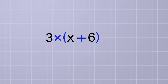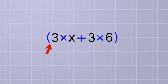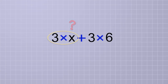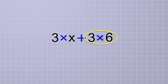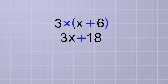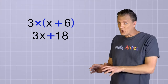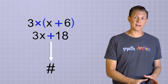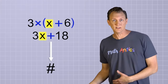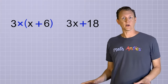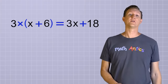Just like in the arithmetic video, we can distribute a copy of the 3 to each member of the group, so the group goes away and we end up with 3 times x plus 3 times 6. The 3 times x can't be simplified any further because we still don't know what x is. But we can simplify 3 times 6 and just write 18. So the distributed form of this expression is 3x plus 18. And we know that these two forms of the expression are equivalent because they follow the distributive property.